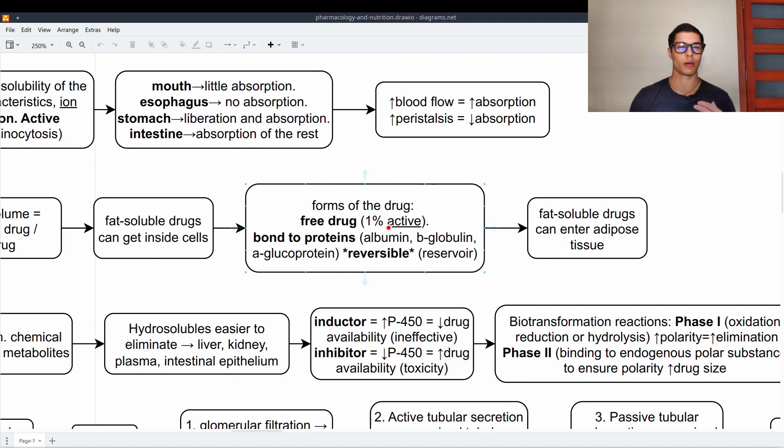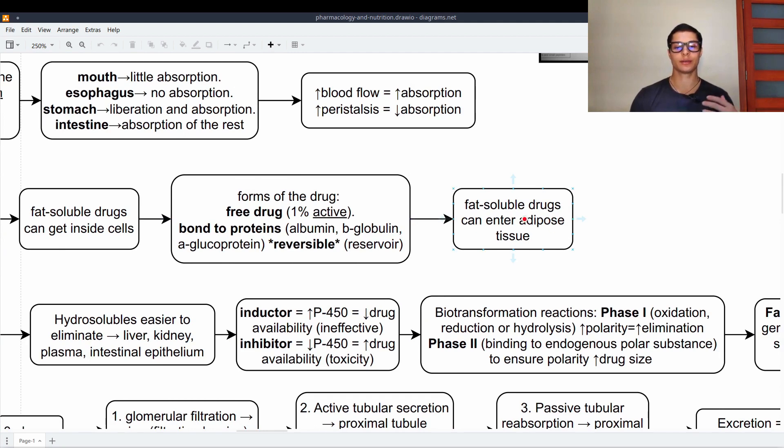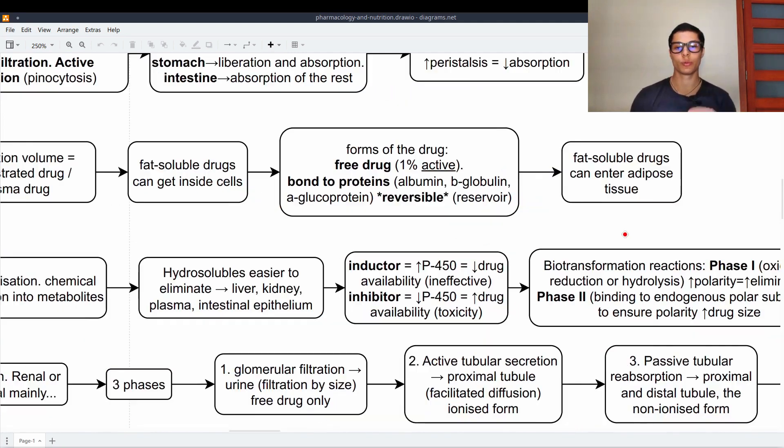Forms of the drug. It can be either free or bound to proteins. The free drug is around 1% and it is the active form. Then the drug bound proteins, it can be bound to albumin, beta globulin or alpha glucoprotein. This is reversible and the bond to proteins is the reservoir. So when the 1% gets used, we can reverse and free more drug to get the effect. Fat soluble drugs can enter adipose tissue as well. So we can store some drugs in the adipose tissue.